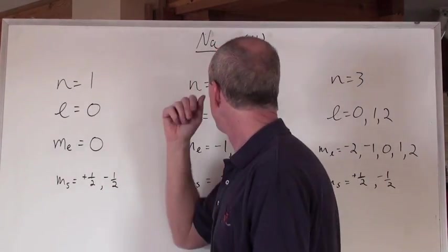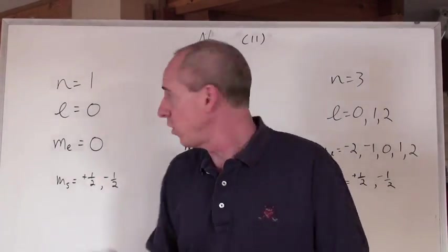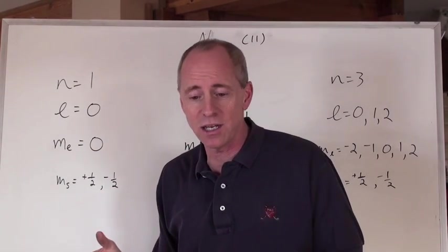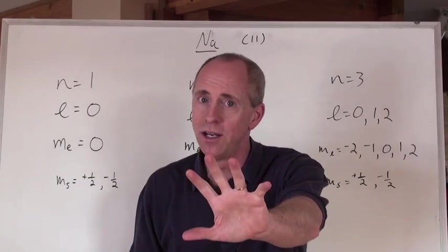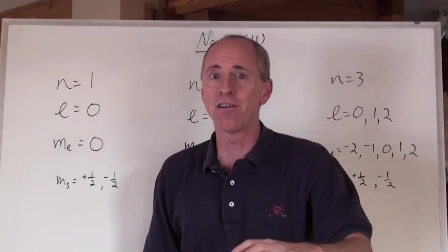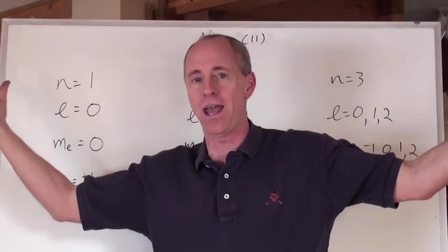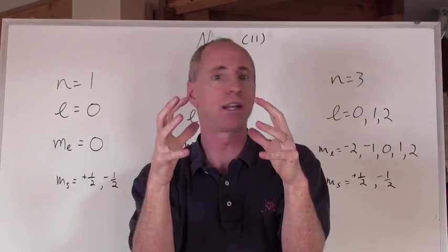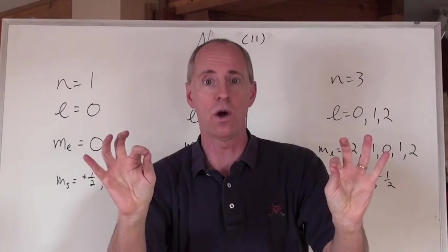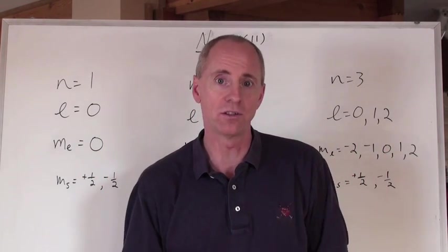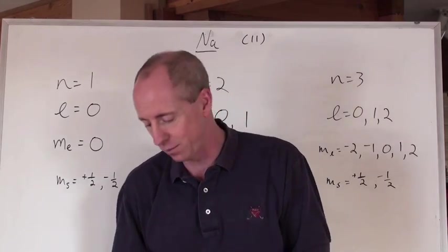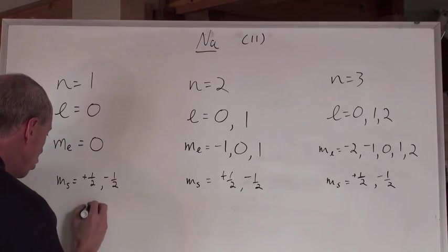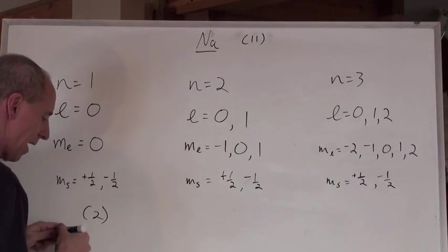Now you're going to say, oh chem guy, now wait a minute, lithium was also 1 0 0 plus 1 half and 1 0 0 minus 1 half, and you just said that you can't have them. No, no, no. You can have the same set of quantum numbers in different atoms, but in the same atom, electrons cannot have the same quantum numbers. That's what Pauli's exclusion principle is. We've got the first two, so there's two electrons that have been represented now.